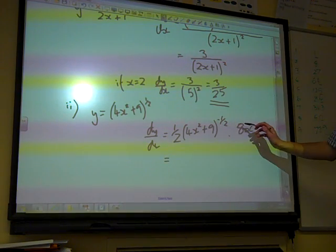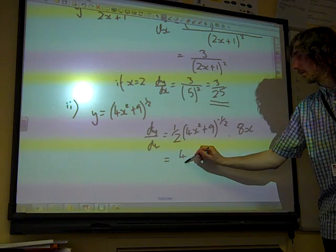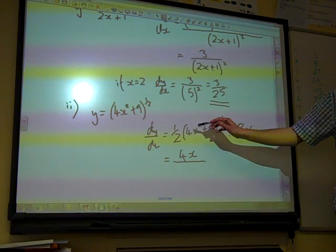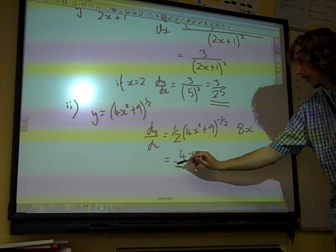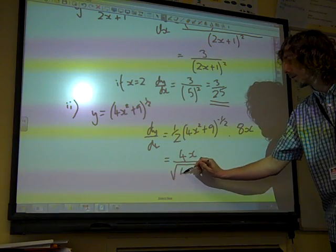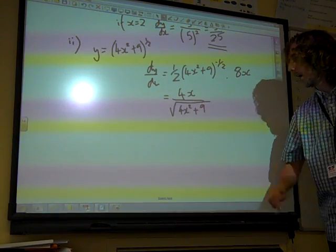So, this is, well, a half of the 8x would be 4x. And this is the bracket to the minus 1 half, so it's divided by the square root of 4x squared plus 9.